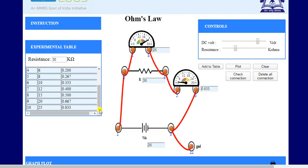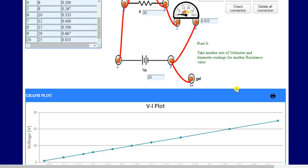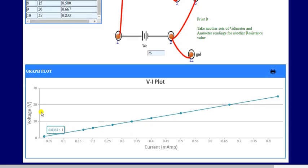So in our experimental table, we have 10 different values of voltage and current. Then we will plot a graph between voltage and current, and this graph shows that there is a linear relationship between voltage and current.